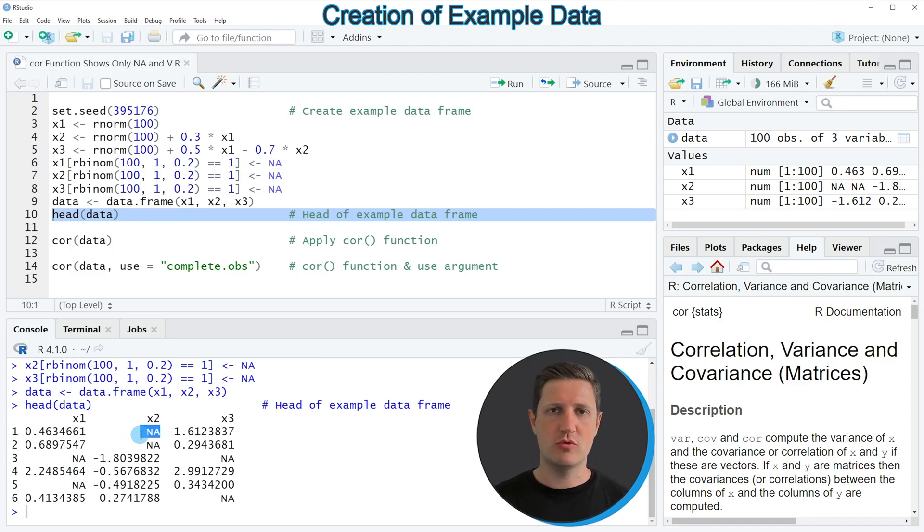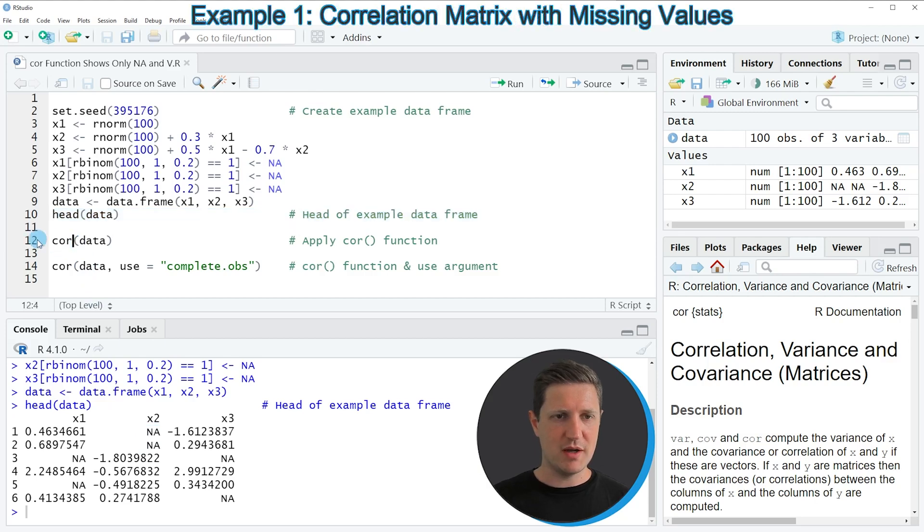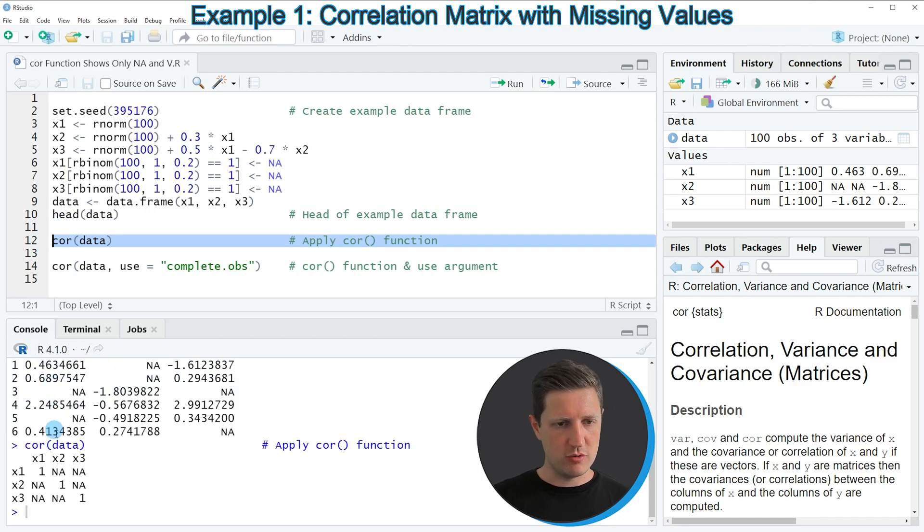So let's assume that we want to create a correlation matrix which is showing the correlations between the variables in our data frame. Then we might try to apply the cor function as you can see in line 12 of the code. If you run this line of code you can see at the bottom in the RStudio console that the output contains a correlation matrix. However, as you can see each of the correlations between the variables in our data set have been set to NA.